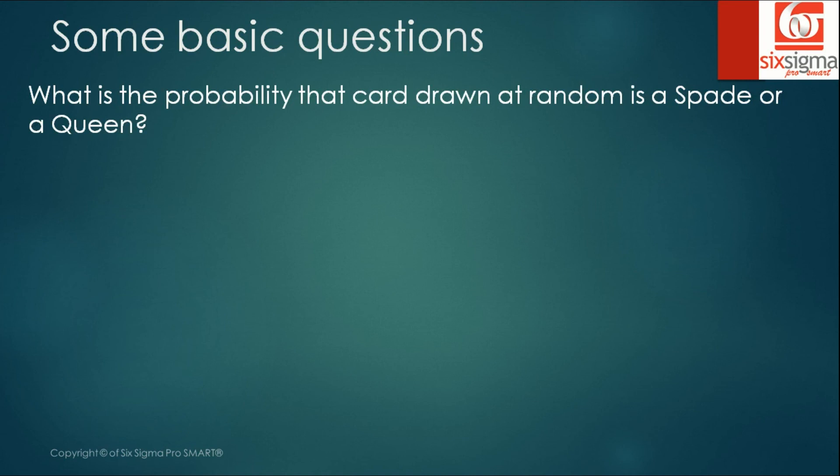Let's take another example. What is the probability that a card drawn at random is a spade or a queen? Now this, if you can see, is an example with some overlap. Because you will have four queens in a deck, you will have 13 spades in a deck, but you will also have a queen of spades. Which means you are talking about an intersection kind of a problem where the two sets are overlapping.